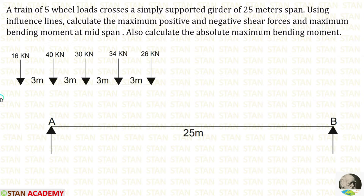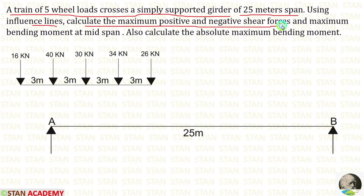Hello everyone. Today we are going to do a problem based on influence line diagram. A train of 5 wheel loads crosses a simply supported girder of 25 meter span. Using influence lines, calculate the maximum positive and negative shear forces and maximum bending moment at mid span. Also calculate the absolute maximum bending moment.